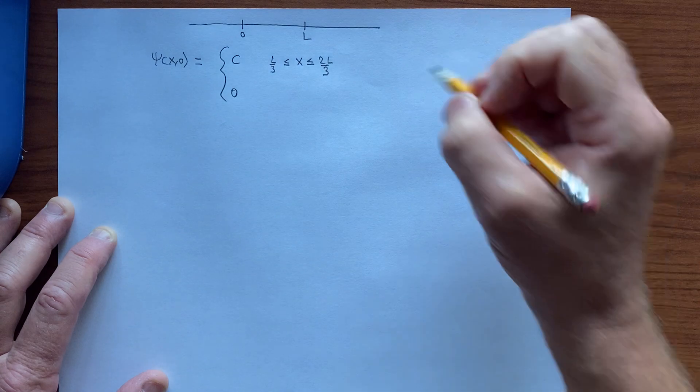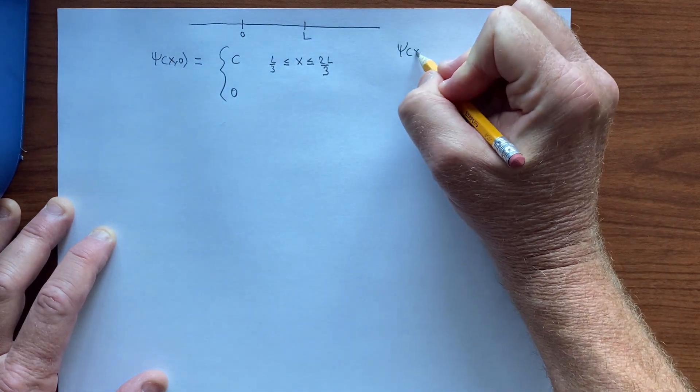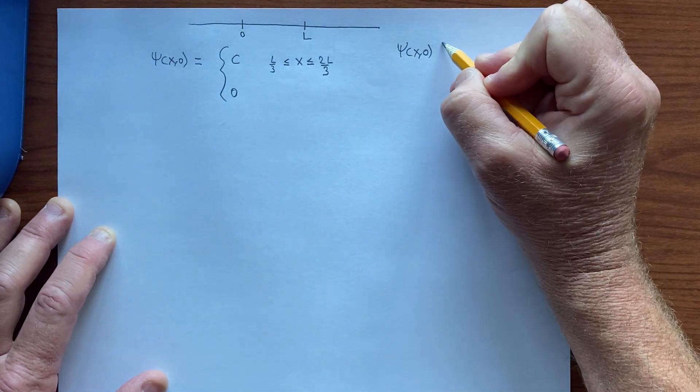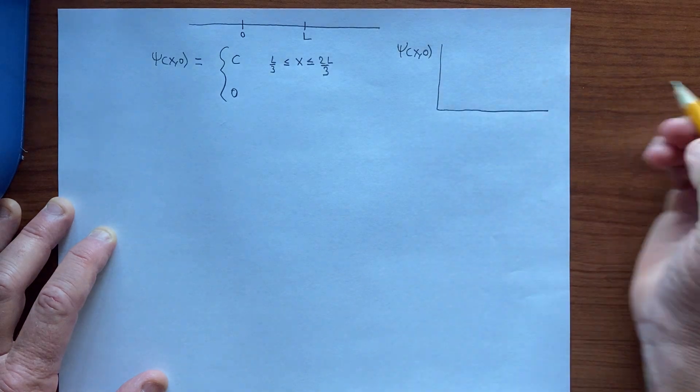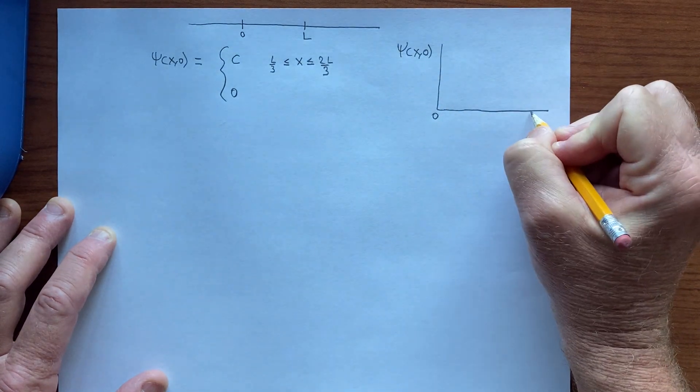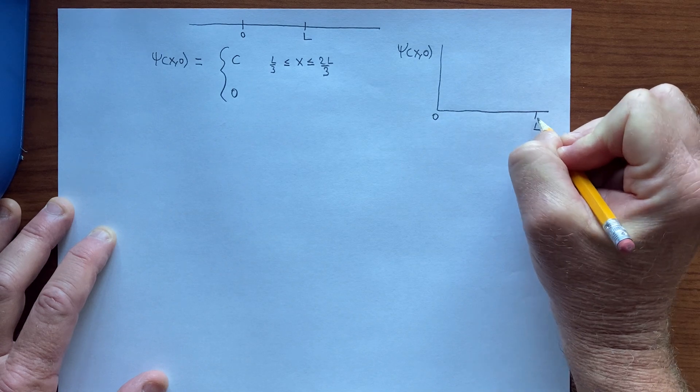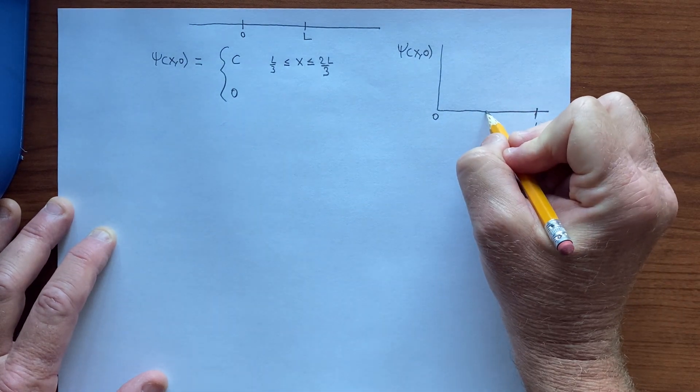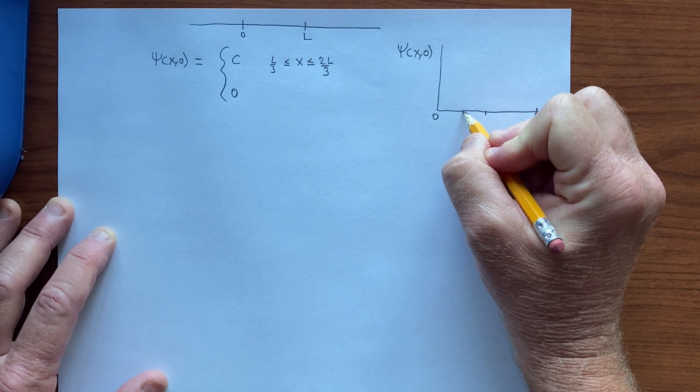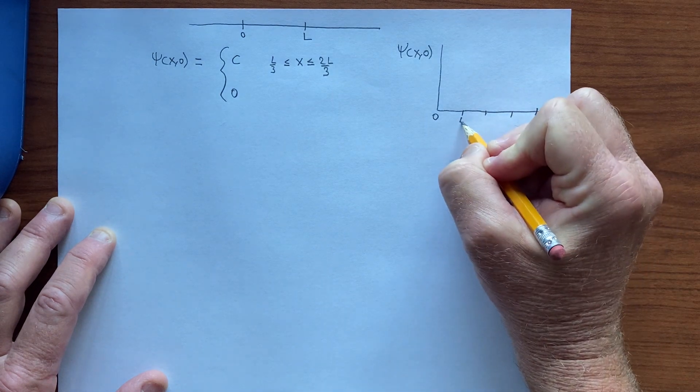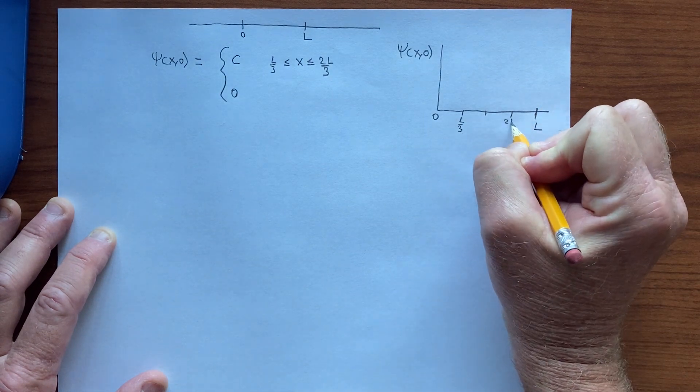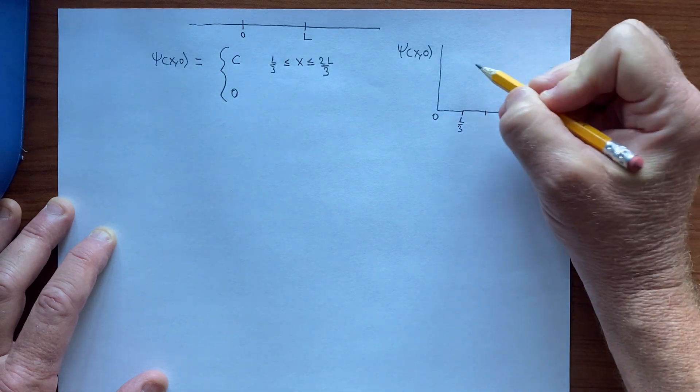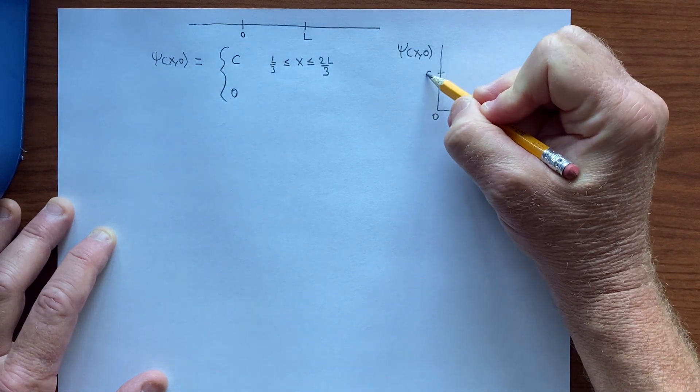So if we plot this psi of x and 0, then we have a function that looks like this. This is 0, this is L, we have L over 2, this is L over 3, and 2L over 3. And so let's say that's c.